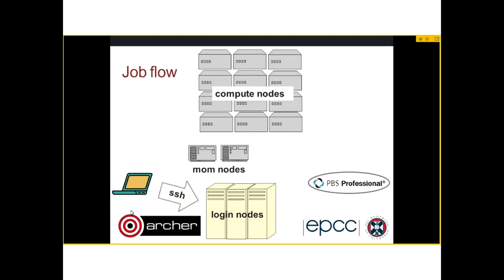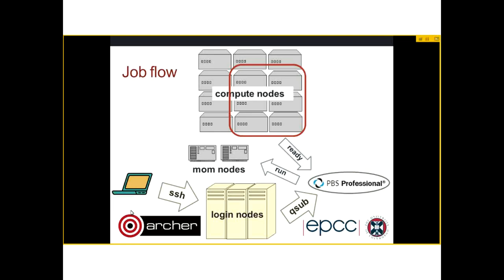You SSH into the login nodes, issue your QSub, and your job is queued by PBS. PBS identifies six compute nodes that you've reserved. Your job is run and automatically linked to these compute nodes, but the only way you can use them is by executing AP run. There's a complete disconnect between the resources you request (the QSub parameters, minus L select) and the use of them - it's up to you to make sure your job uses them, by issuing AP run with the correct number of cores.